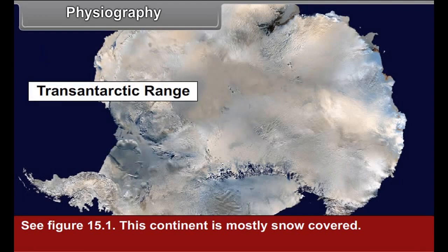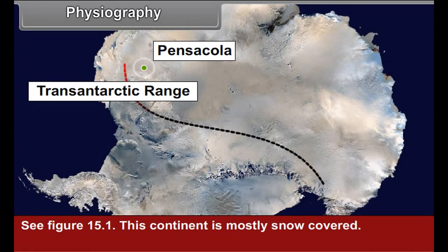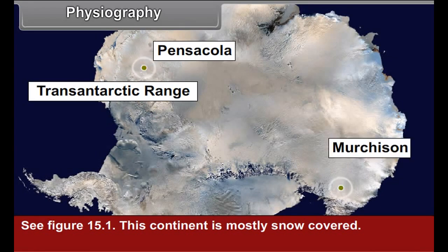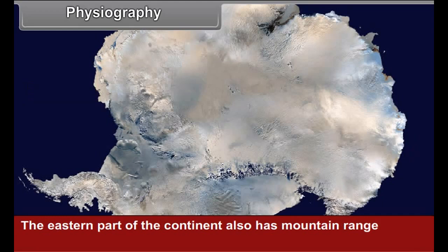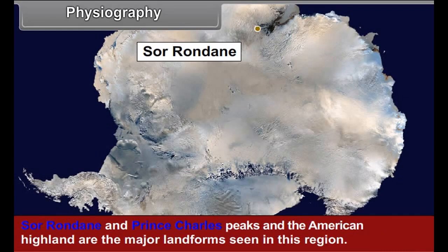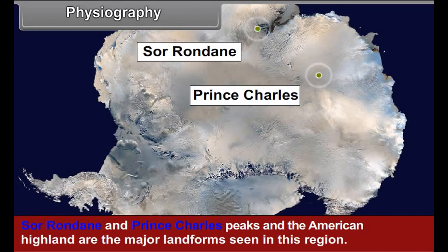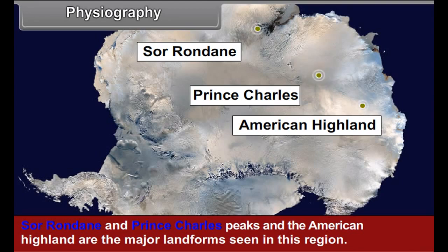The Trans-Antarctic range extends from Pensacola near the South Pole till Mountain Murchison. The eastern part of the continent also has a mountain range. Sir Rondane and Prince Charles peaks and the American Highland are the major landforms seen in this region.